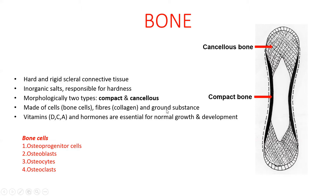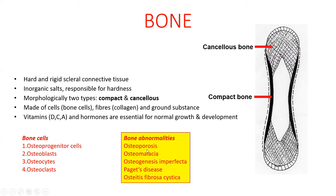For normal growth and development, adequate intake of vitamins and minerals are essential. Similarly, balanced hormonal activities are also needed. Any disturbance in the process may lead to bone anomalies like osteoporosis, osteomalacia, osteogenesis imperfecta, Paget's disease, and osteitis fibrosa cystica.